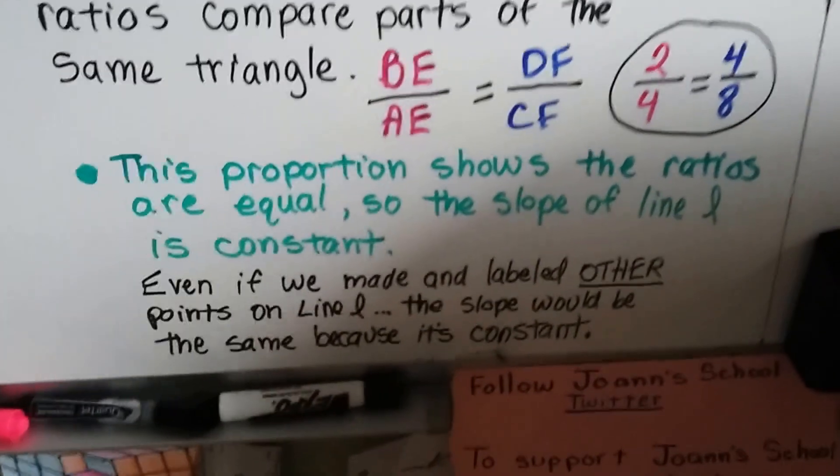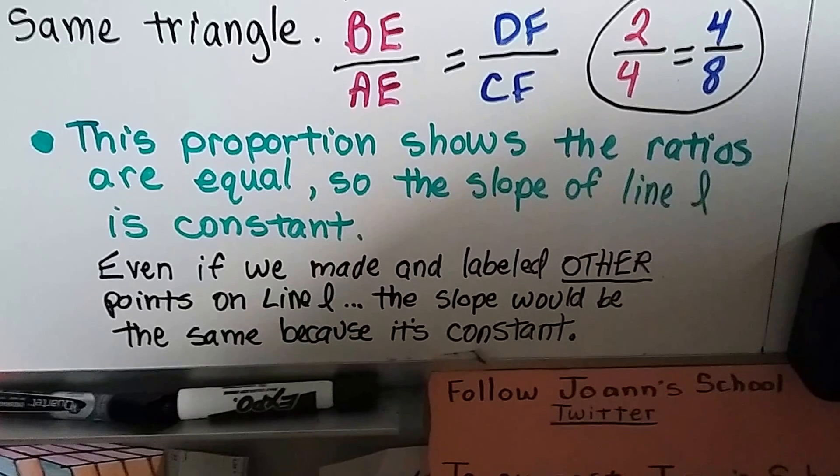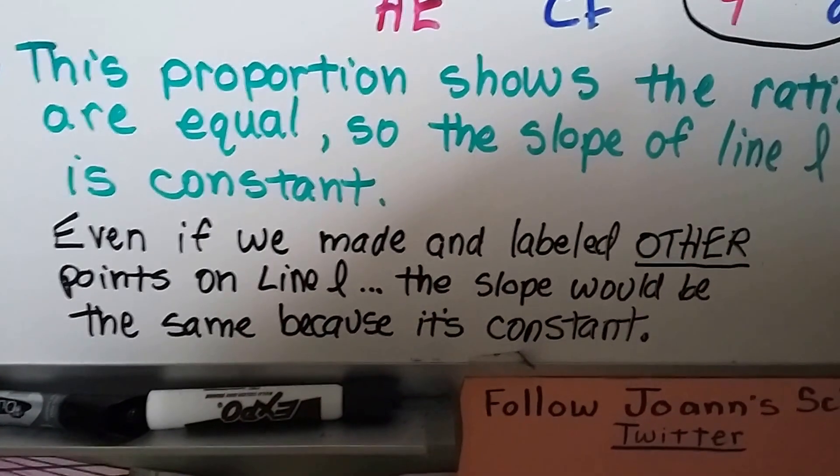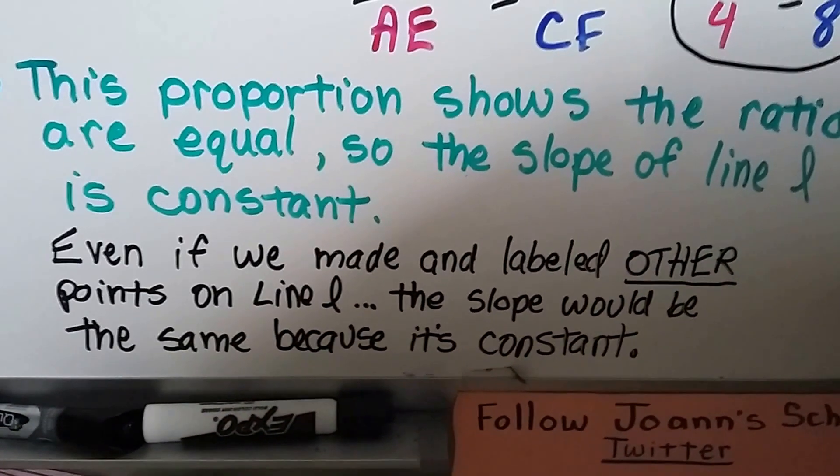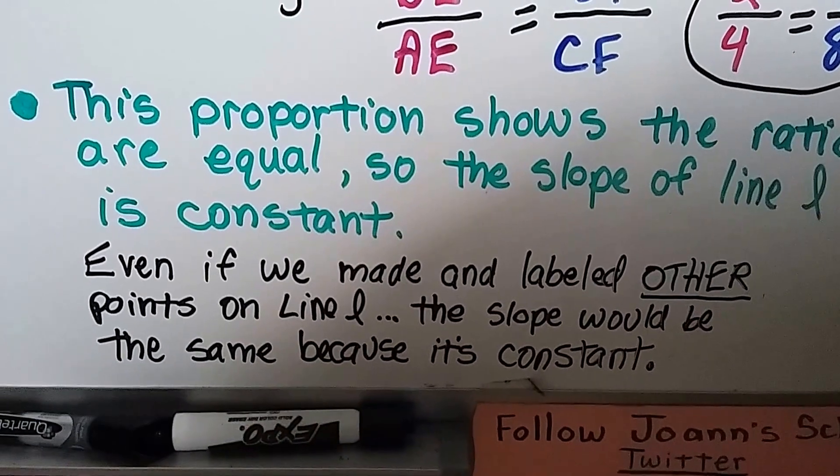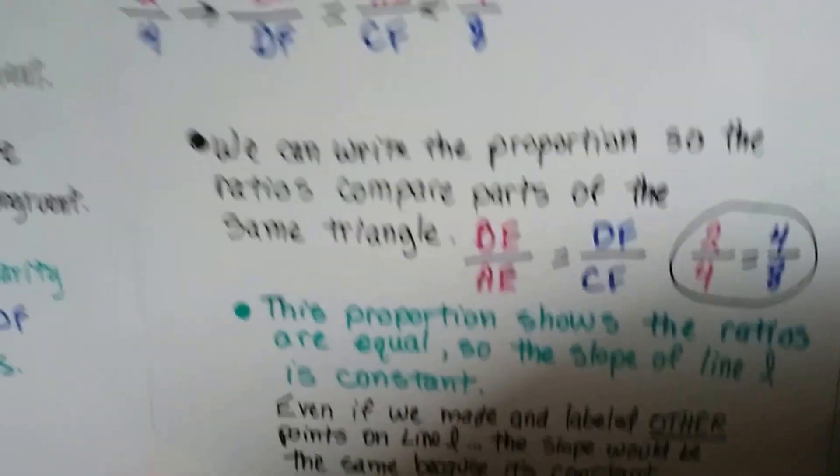And this proportion shows the ratios are equal, so the slope of line L is constant. And even if we made and labeled other points on line L, we could put several other points on there and do the same thing. The slope would be the same because it's constant.